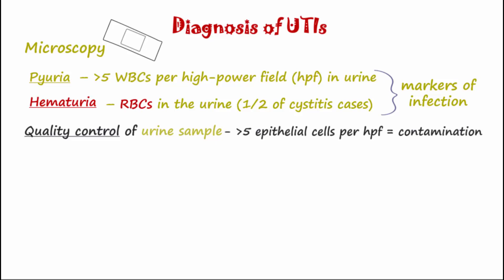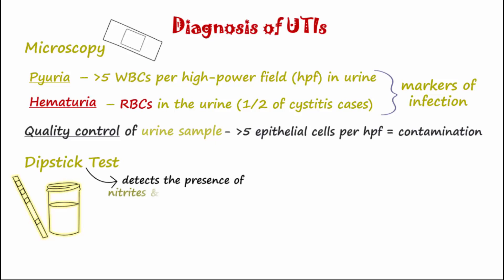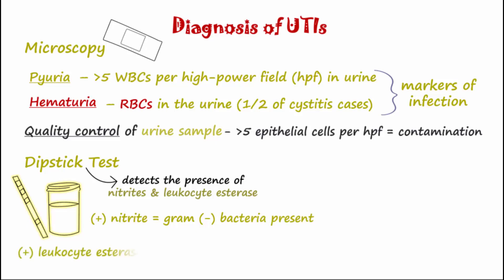The presence of more than five epithelial cells per high-power field is considered a contaminated specimen, making other findings in the urine sample unreliable. Dipstick tests are quick and inexpensive and can detect the presence of nitrites and leukocyte esterase. A positive nitrite test indicates the presence of gram-negative bacteria, which are capable of converting endogenous nitrates into nitrites in the urine. Leukocyte esterase is an enzyme found in neutrophils and other white blood cells, and a positive test also indicates pyuria.